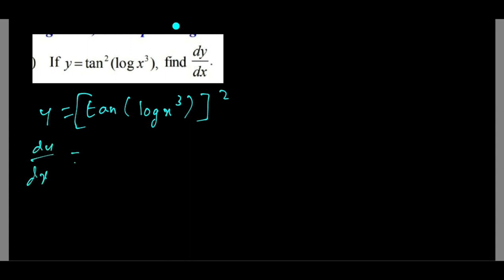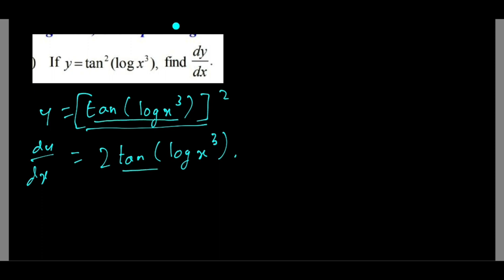This is f of x square, so by chain rule it will be 2 times tan of log x cubed. Now we will see here: this function's derivative, and then we will do the derivative of tan of log x cubed. The derivative of tan f(x) gives sec squared. Then we do log x cubed derivative.